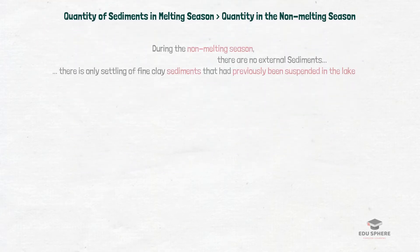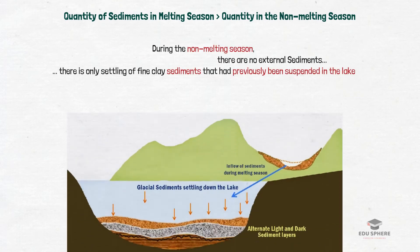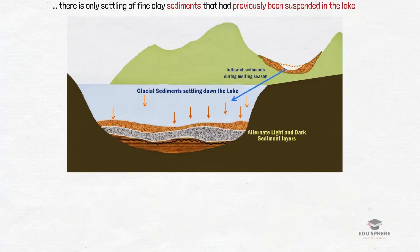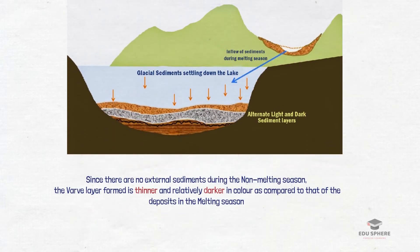During the non-melting season the only sediment which gets deposited on the lake floor is from the melting of any ice on the base of the glacier or from the settling of fine clay sediments that had previously been suspended in the lake. Therefore the sediment layers in the non-melting season tend to be thinner and a bit darker in color.